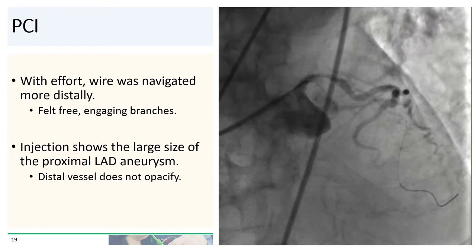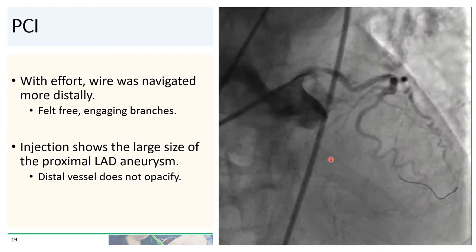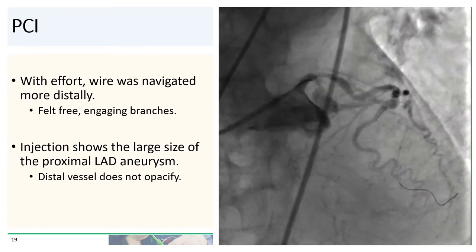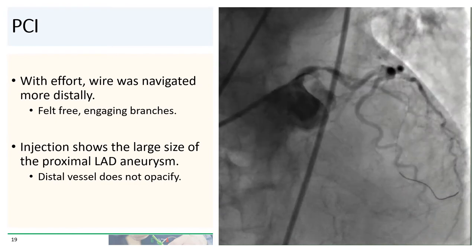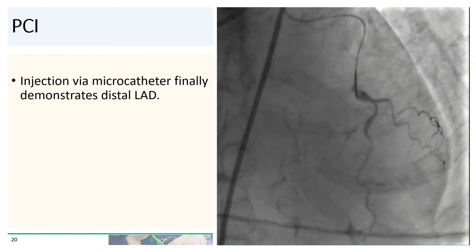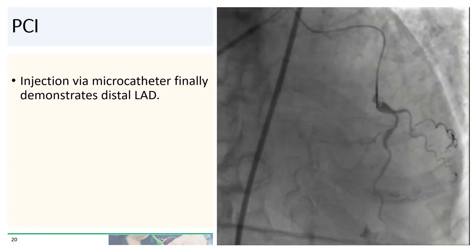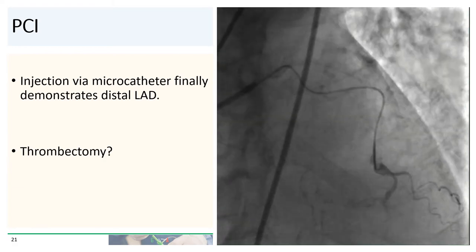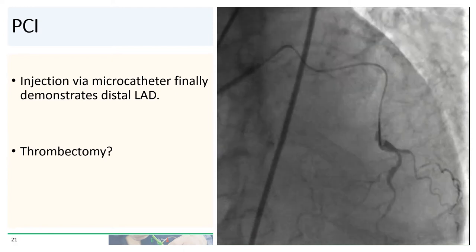Proximal injection again demonstrated the very large size of the proximal LAD aneurysm, with a stenosis both prior to the aneurysm as well as severe diffuse disease distal to it. At this point, the distal vessel still did not opacify. We performed contrast injection through the microcatheter and finally were able to demonstrate the remainder of the LAD. Given the abundant amount of thrombus, we were considering whether to perform aspiration thrombectomy.